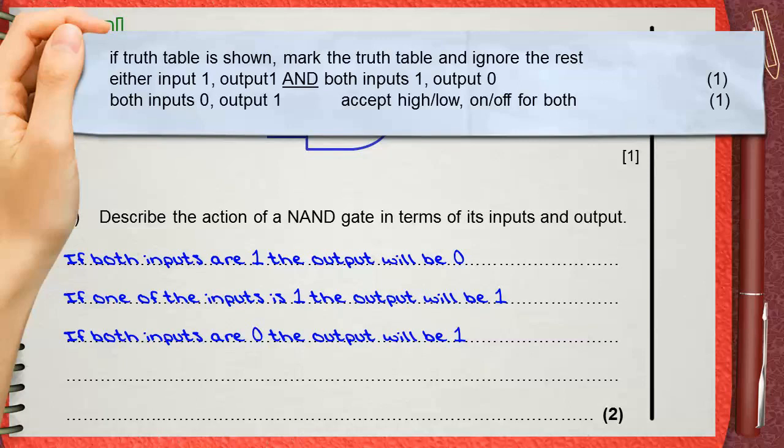This is for one mark. Saying that if both inputs are 0, the output will be 1, this is for the second mark. The mark scheme also accepts high and low, or on and off, instead of 1 and 0. So we have one mark for the first two lines, and the last line gives us the second mark.